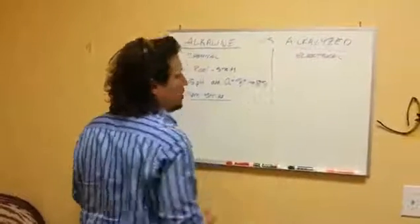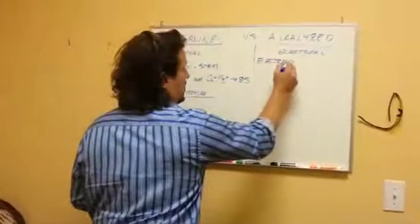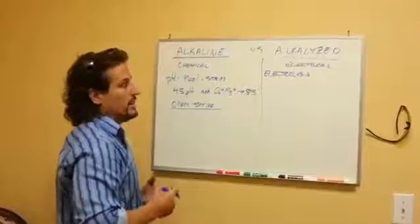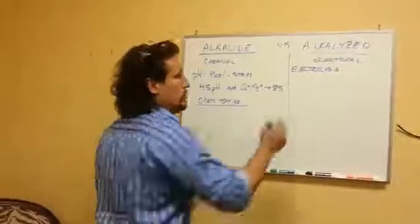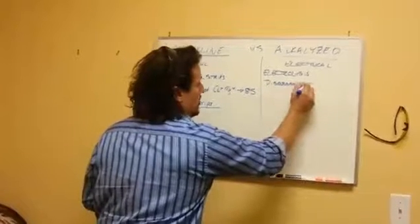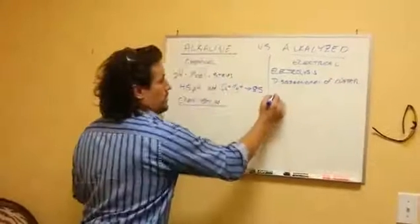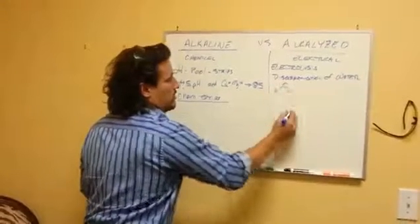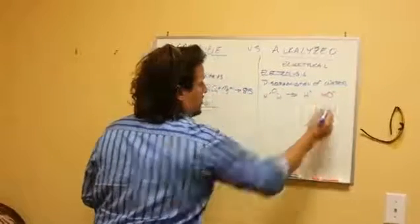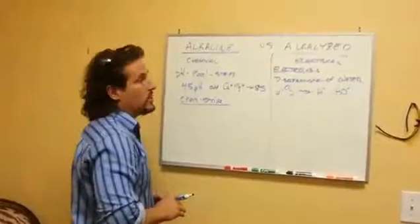However, when you start to compare this to alkalized water, what's going on is there is an electrolysis process, and basically it's shocking the water. It takes an enormous level of energy to do a process called the disassociation of water. You can Google that. Basically it's the process by which you take water and you split it into a hydrogen ion and a hydroxyl ion. The hydroxyl gives you a free electron that you can use to be a free radical scavenger.